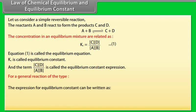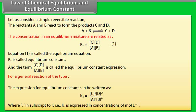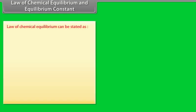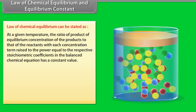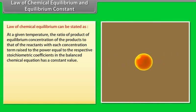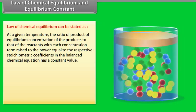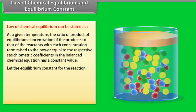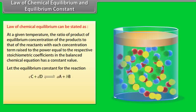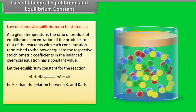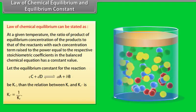For a general reaction, the equilibrium constant expression can be written where Kc is expressed in concentration of mole per liter. The law of chemical equilibrium states that at a given temperature, the ratio of the product of equilibrium concentrations of the products to that of the reactants, with each concentration term raised to the power equal to the respective stoichiometric coefficients, has a constant value. For the reverse reaction, the equilibrium constant Kc' equals 1/Kc.